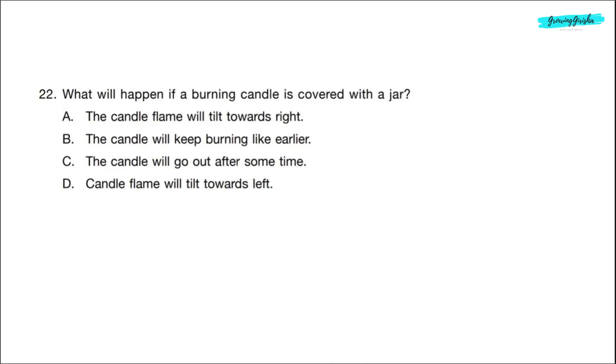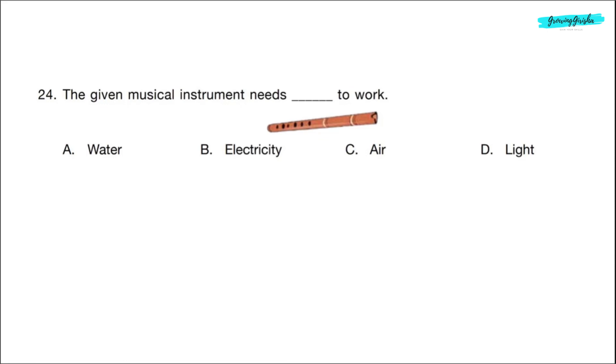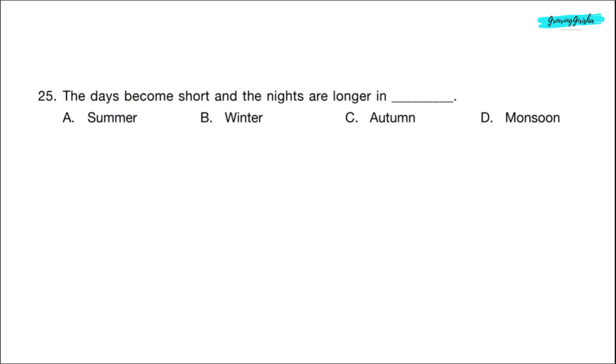Question 22. What will happen if a burning candle is covered with a jar? Correct answer is option C. The candle will go out after some time due to the absence of air. Question 23. Sohail likes to play in puddle of water. On which of these days he can enjoy playing in the puddle? We get puddles during rainy season. So correct answer is option D. Question 24. The given musical instrument needs dash to work. The given musical instrument is of flute. Flute needs air to work. Correct answer is option C.